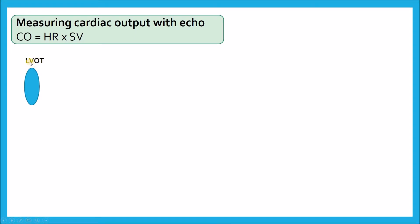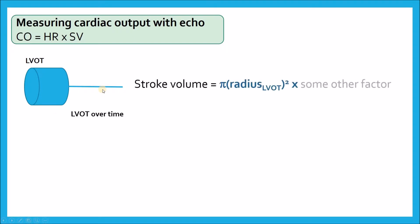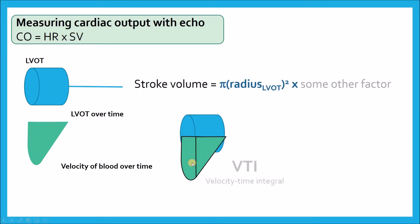Let's take the LVOT — my left ventricular outflow tract. If I know the area of that left ventricular outflow tract and I look at it over time — systole and diastole — I might be able to start to infer what my stroke volume is. If I know this area over time and what's happening with the blood going through it, I can start to overlap those two curves and get what is called the velocity time integral.